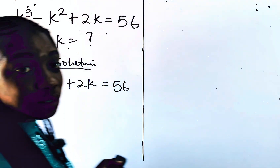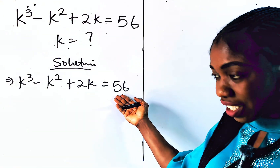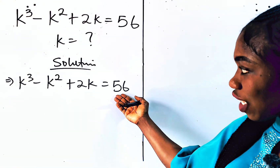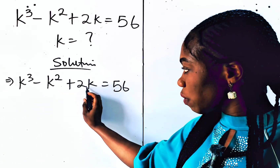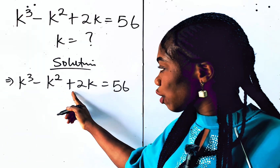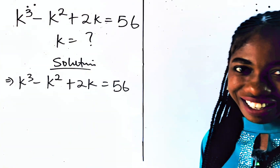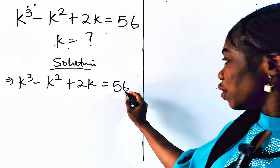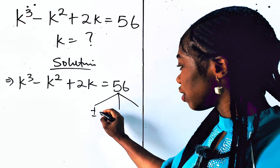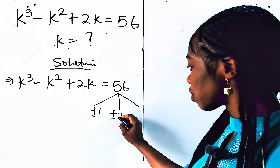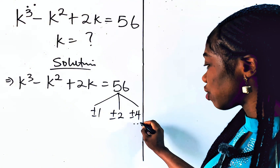What to do at this point is just to find the factors of 56 such that when you cube that, square it and multiply by 2, if you carry these operations on that, it should be equal to 56. We know that the factors of 56 are plus or minus 1, plus or minus 2, plus or minus 4, and the rest of them.